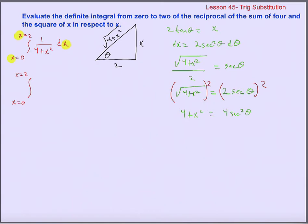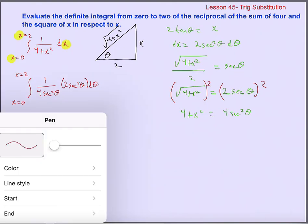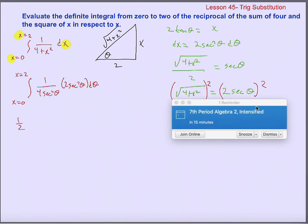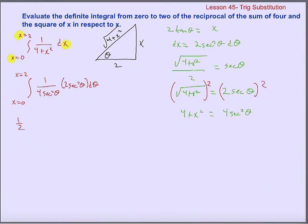Let's do our substitution. 1 over 4 plus x squared becomes 1 over 4 secant squared theta, and dx becomes 2 secant squared theta d-theta. The secant squares cancel out, and I can also reduce 2 over 4 to one half. So I can bring one half out front.